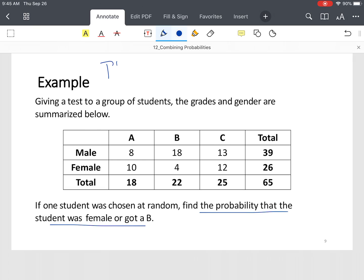So probability of a female student. Use that row. So female students, we have a total of 26. Now remember, probability is, by definition, designed outcome or theoretical probability, designed outcome over total outcomes. So 26 out of 65 students were female.